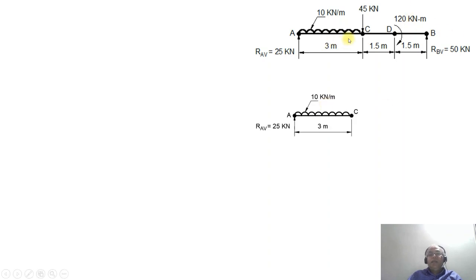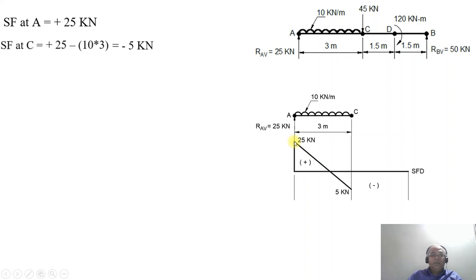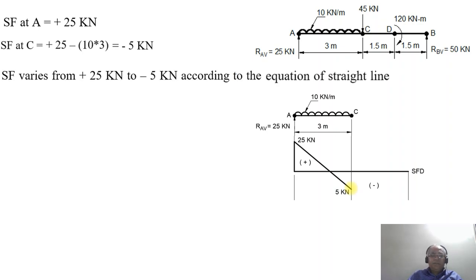Now we consider between A and C with only the UDL, not including the point load at C initially. The shear force at A equals plus 25 kilonewton. SF at C equals 25 minus 10 into 3, which equals minus 5 kilonewton. So the shear force varies from 25 kilonewton to minus 5 kilonewton along a straight line, since it is UDL and the power of x is 1.